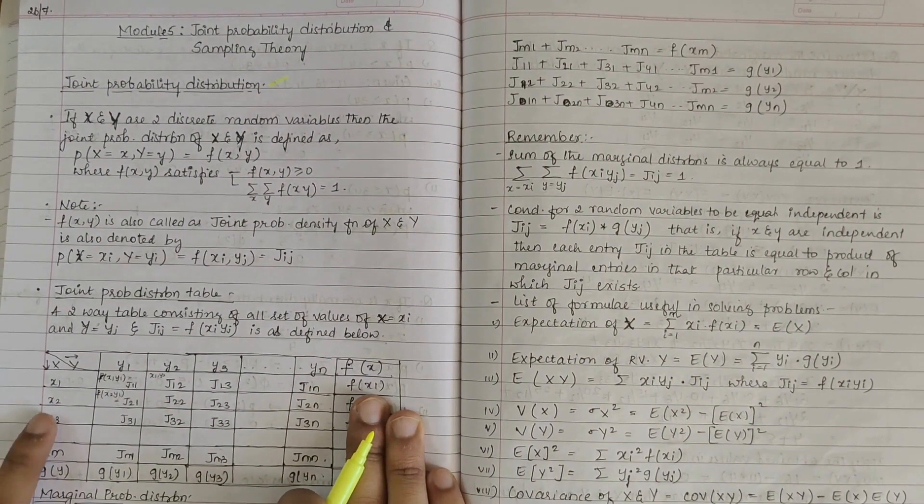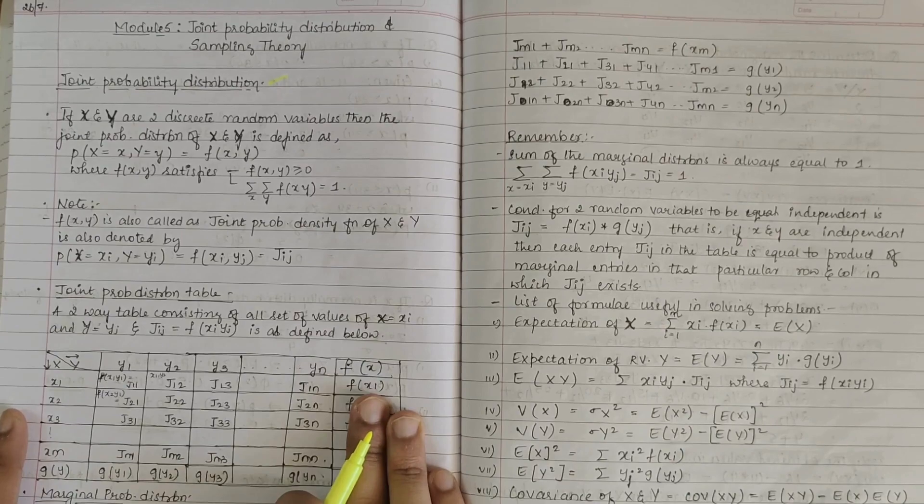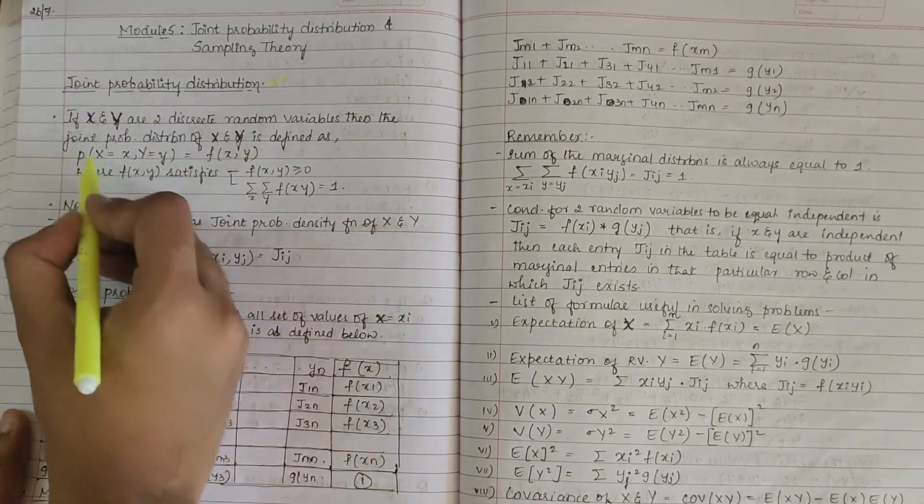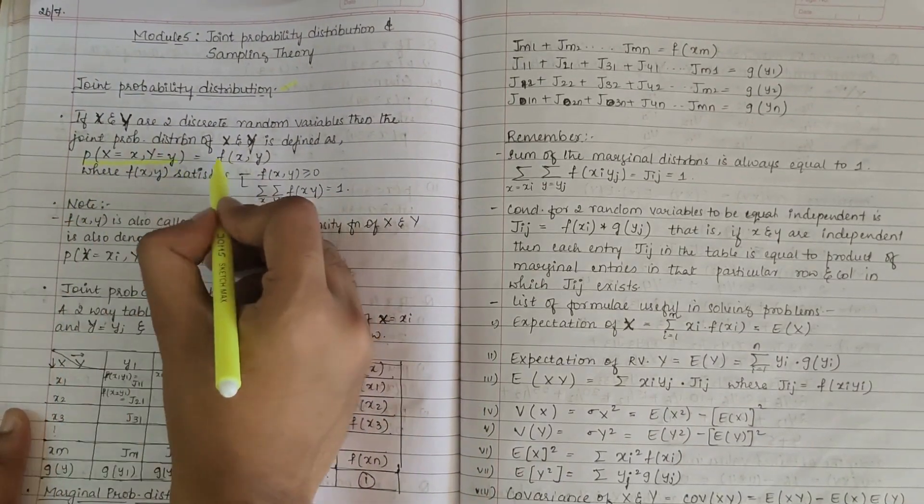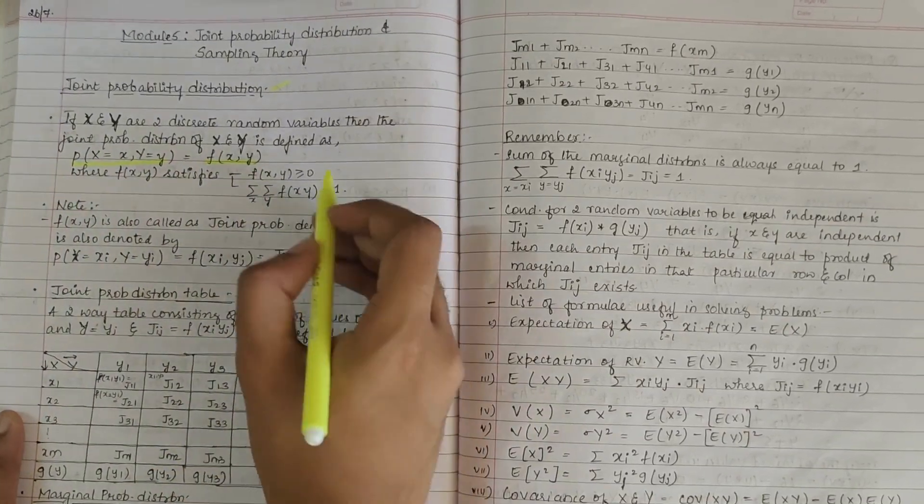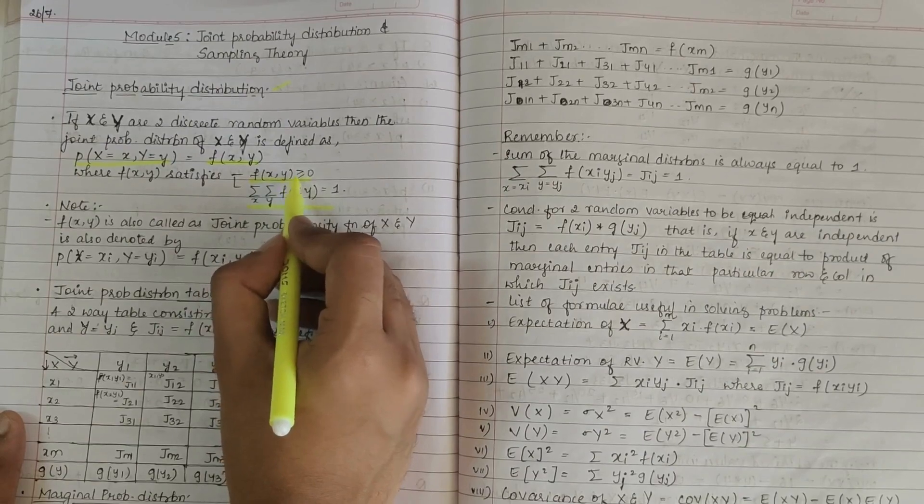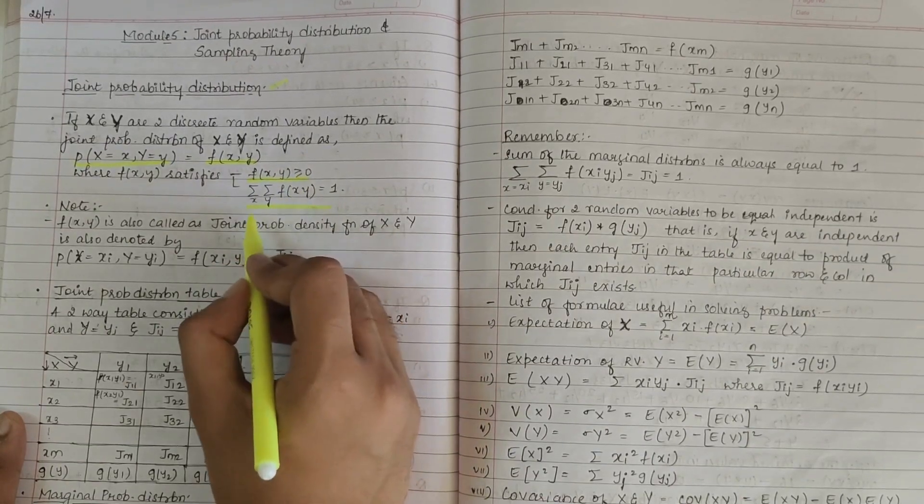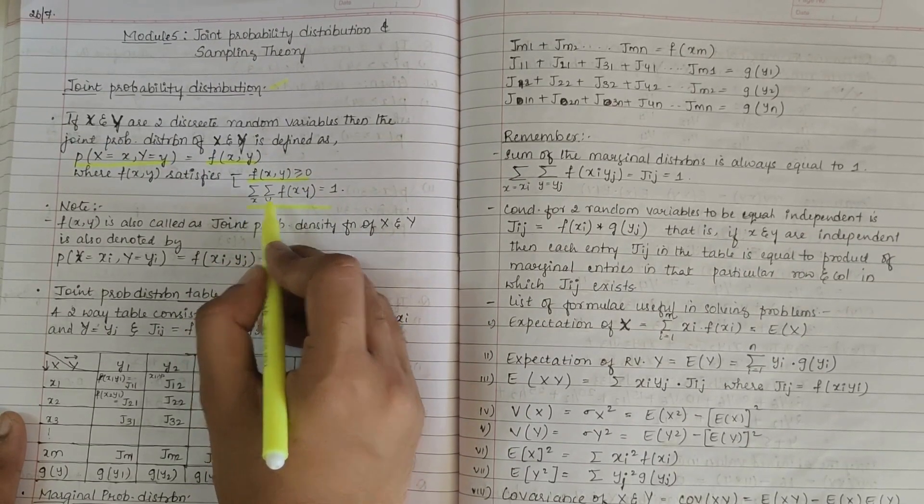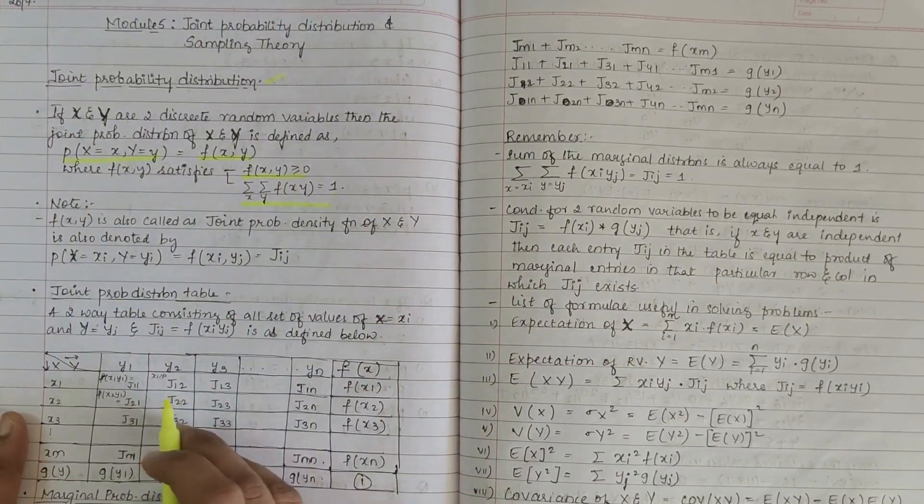distribution of X and Y is defined as P(X,Y) equals f(X,Y), where f(X,Y) should satisfy these two conditions: it has to be greater than or equal to zero, and summation of f(X,Y) should always be equal to one.